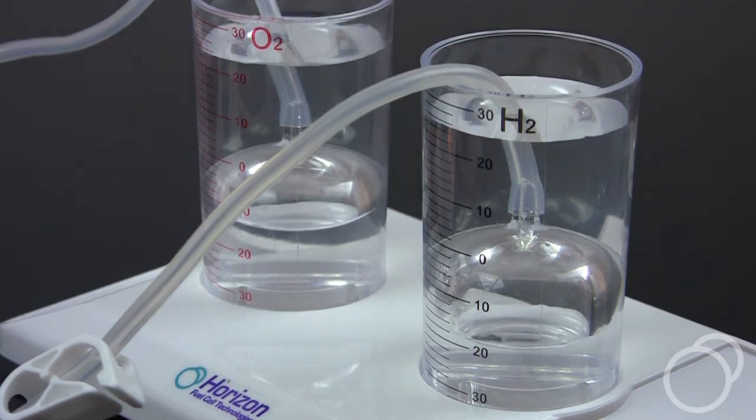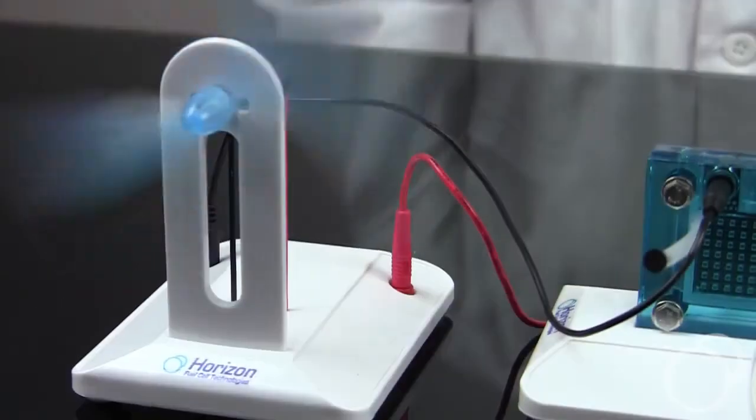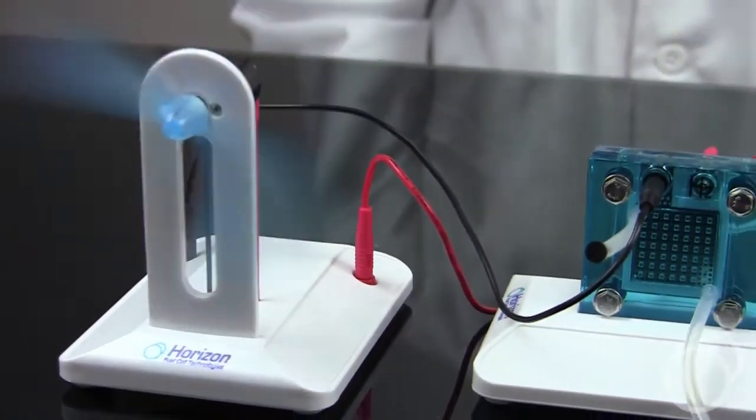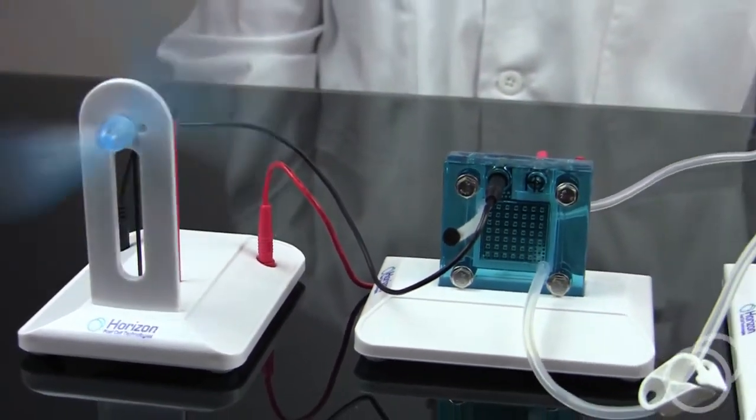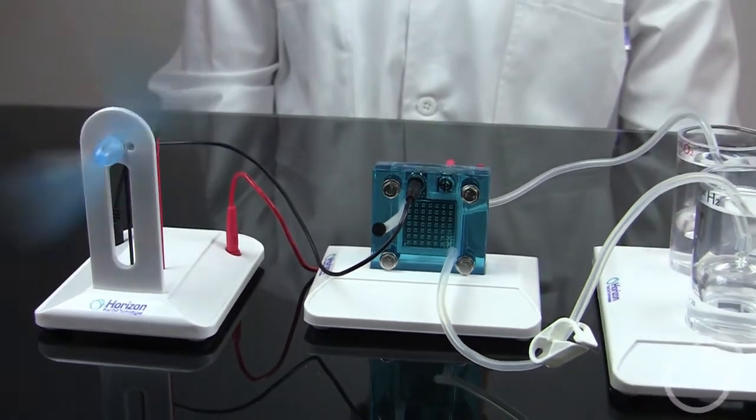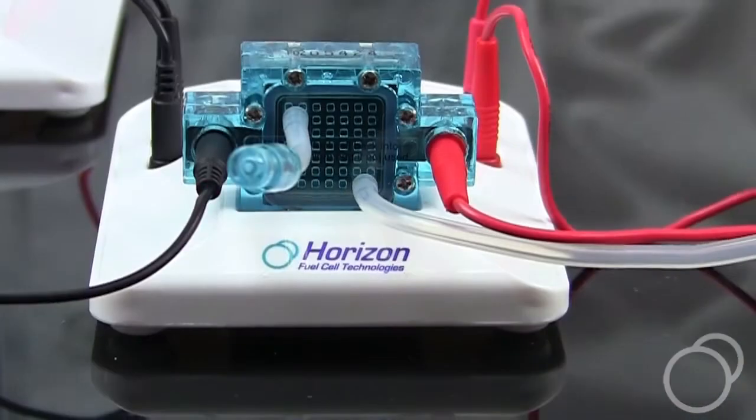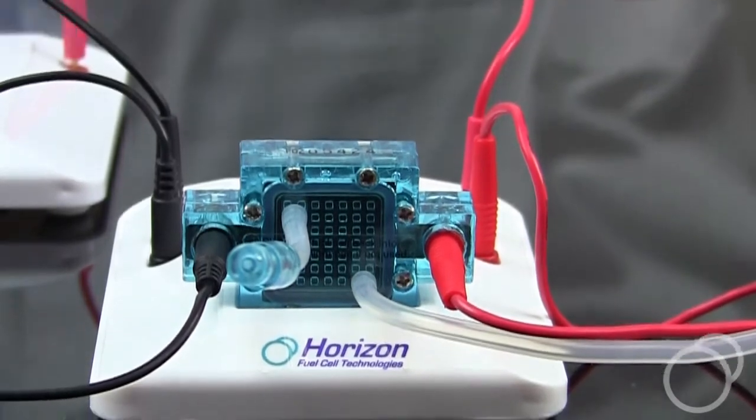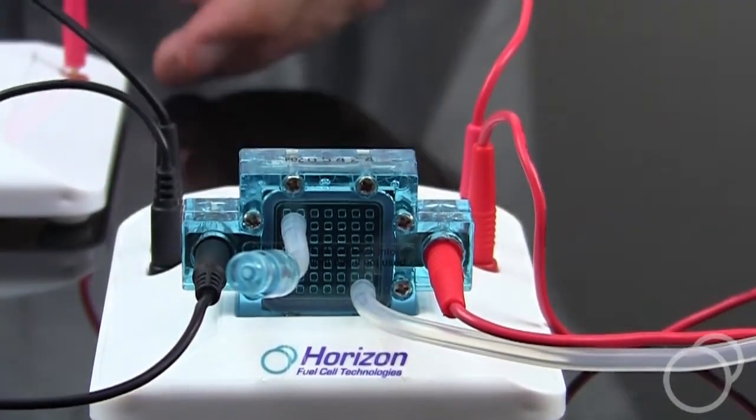Once enough hydrogen has been collected, the fuel cell can work in reverse to generate electricity by recombining the hydrogen and oxygen from the cylinders. The smaller fuel cell takes oxygen directly from the air and combines it with hydrogen gas.